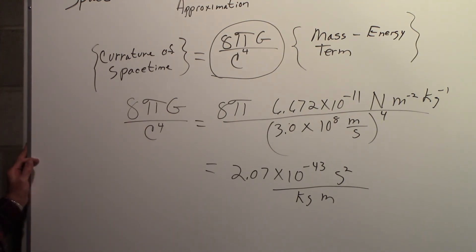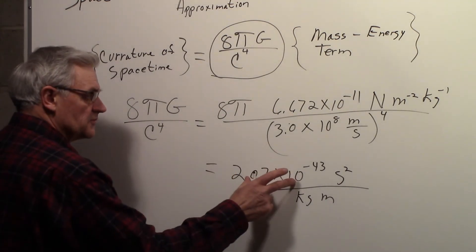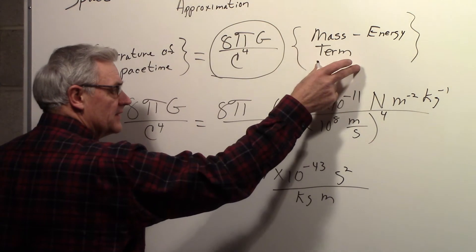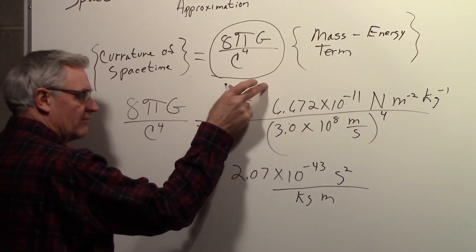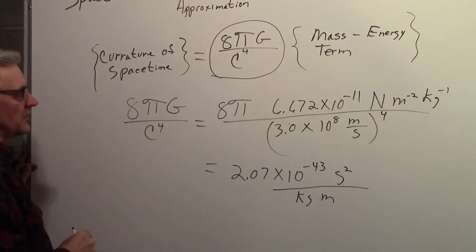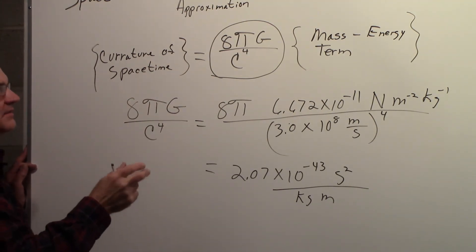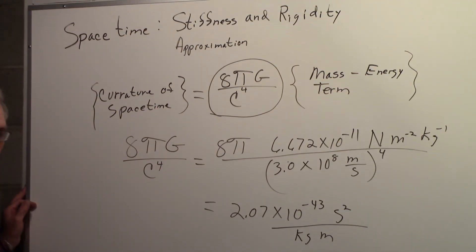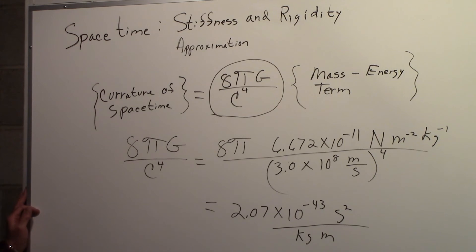So, what this tells you is that, since this is a very small number, it takes a lot of this multiplied by that very small number to make something big enough to cause a change in the curvature of space-time. And you can interpret that to mean that space-time is very stiff and rigid.